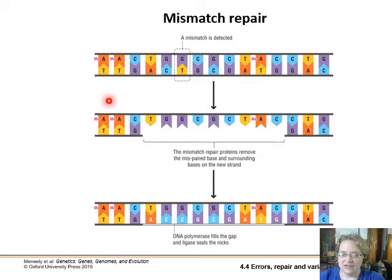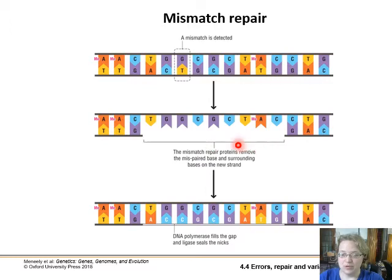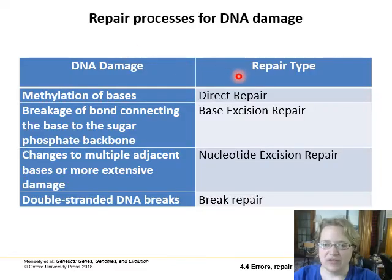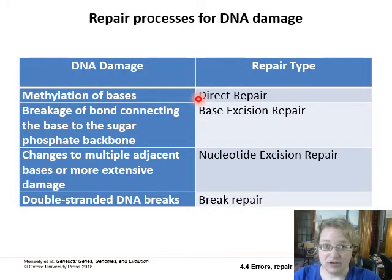If DNA polymerase didn't catch a mismatch, there is a set of proteins called mismatch repair proteins that remove not only the mispaired base but a whole chunk of the strand. Then DNA polymerase can find that open three-prime end and continue synthesizing the rest of the strand, and DNA ligase will come along and seal the gaps.